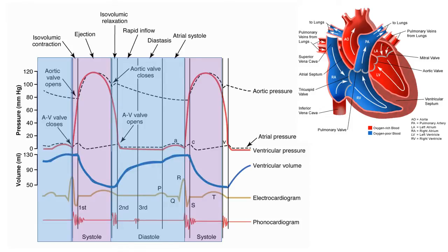During diastole, the ventricles are filling. And during systole, the ventricles are contracting, and thus the ventricular volume is decreasing.